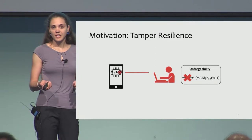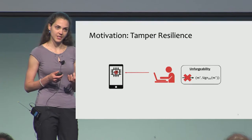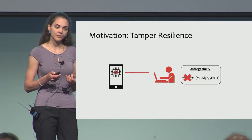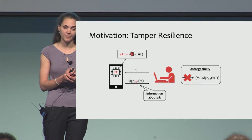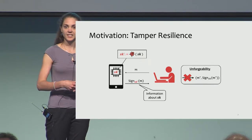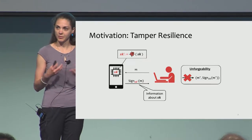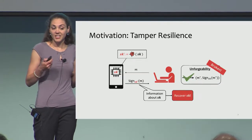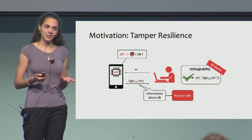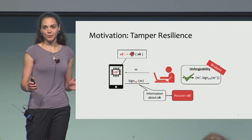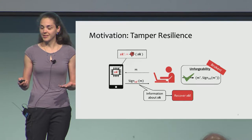But what happens if now an adversary can tamper with the memory of this device? It changes the secret key to some tampered secret key prime. It turns out that in this case some information about the secret key can be leaked, and even enough information to recover the entire secret key. So the unforgeability would be completely broken in this case.